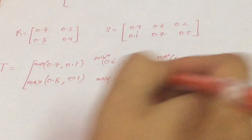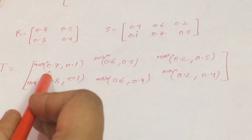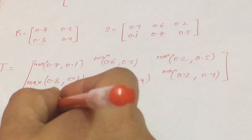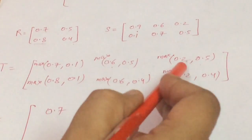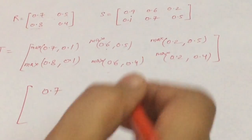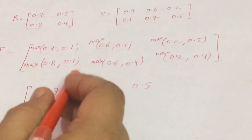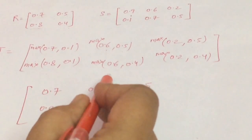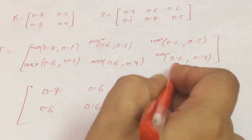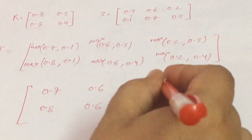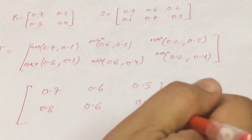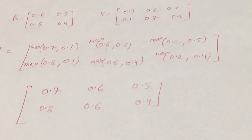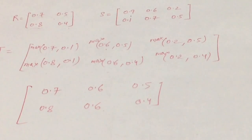Now finding all the maximums: maximum of 0.7 and 0.1 is 0.7; maximum of 0.6 and 0.5 is 0.6; maximum of 0.2 and 0.5 is 0.5; maximum of 0.8 and 0.1 is 0.8; maximum of 0.6 and 0.4 is 0.6; maximum of 0.2 and 0.4 is 0.4. So the resulting relation T is {0.7, 0.6, 0.5, 0.8, 0.6, 0.4}, which matches option number 3 — the correct answer.